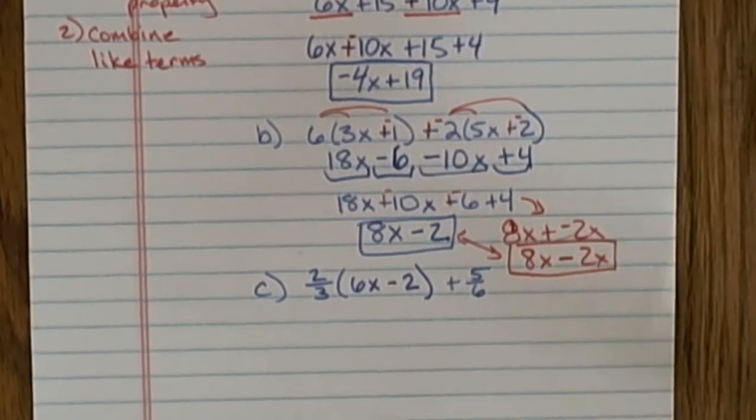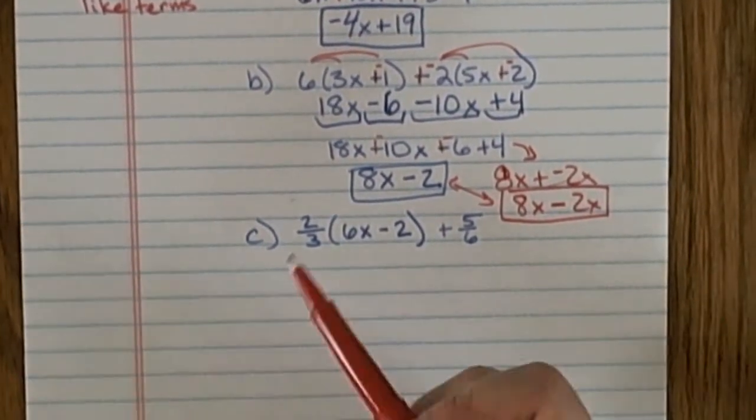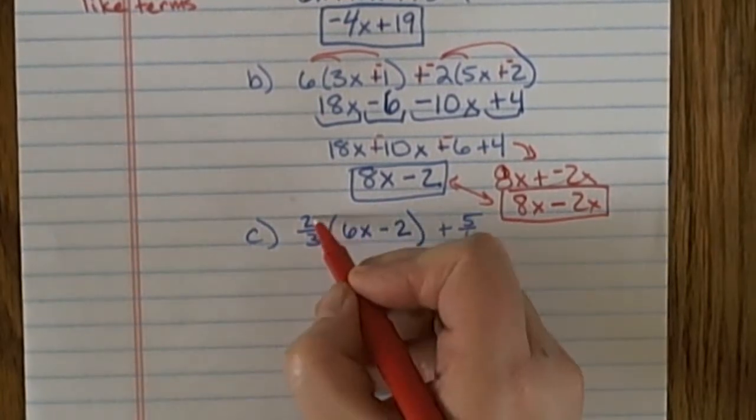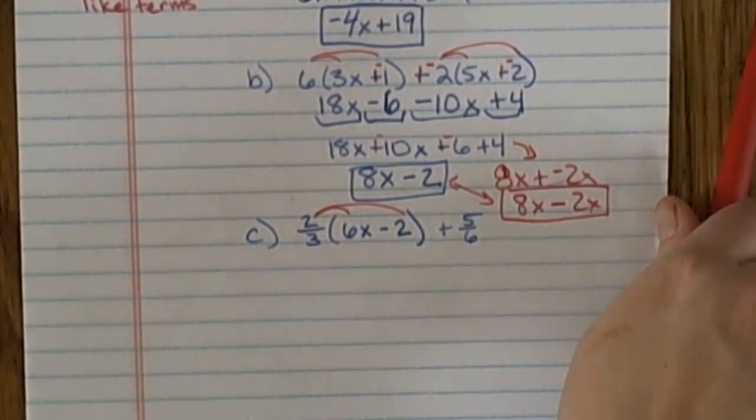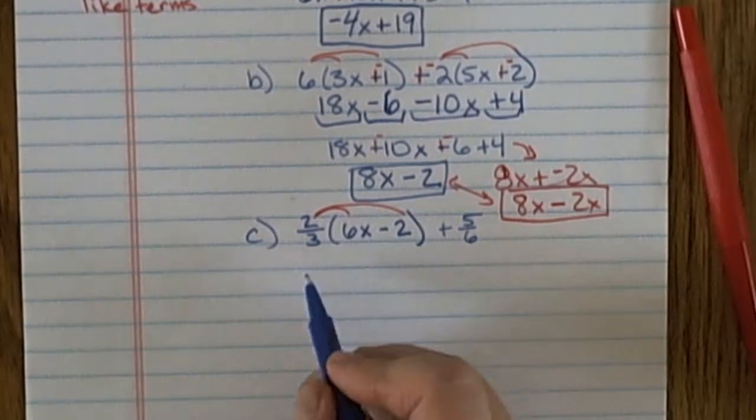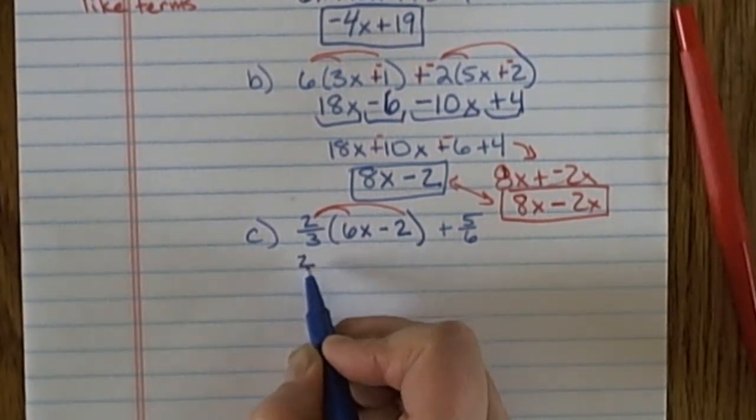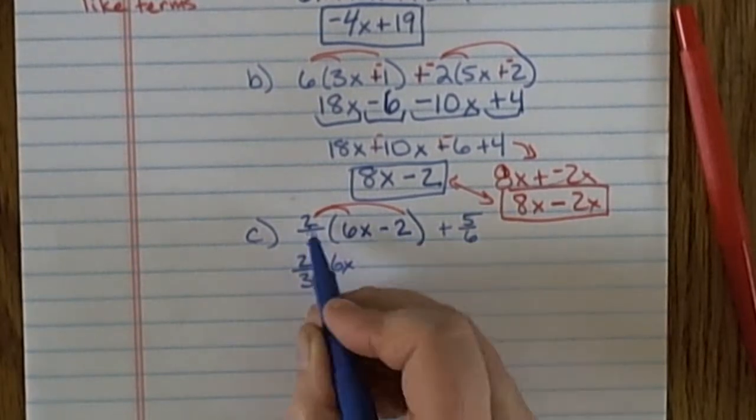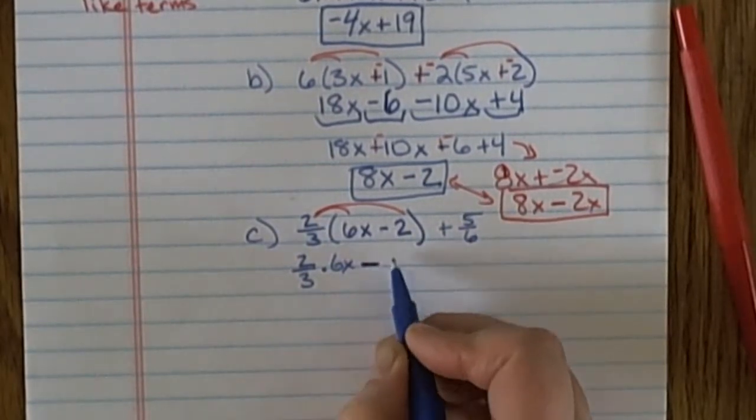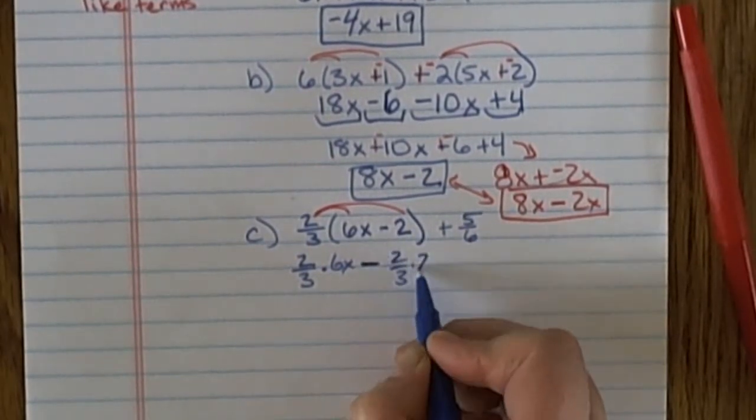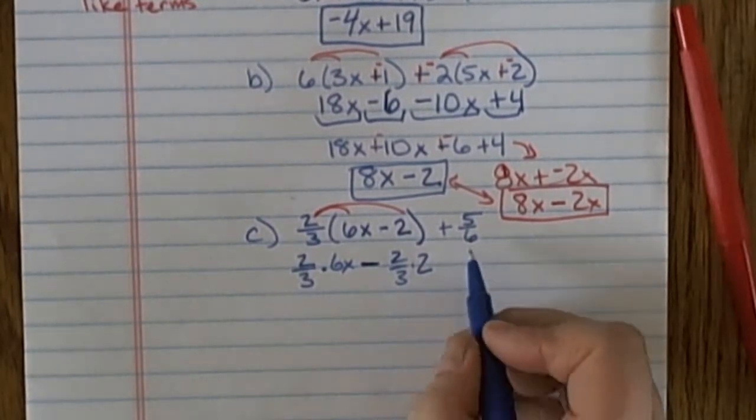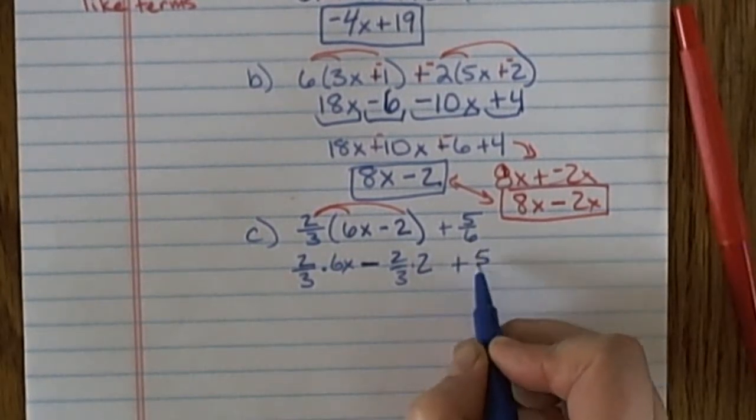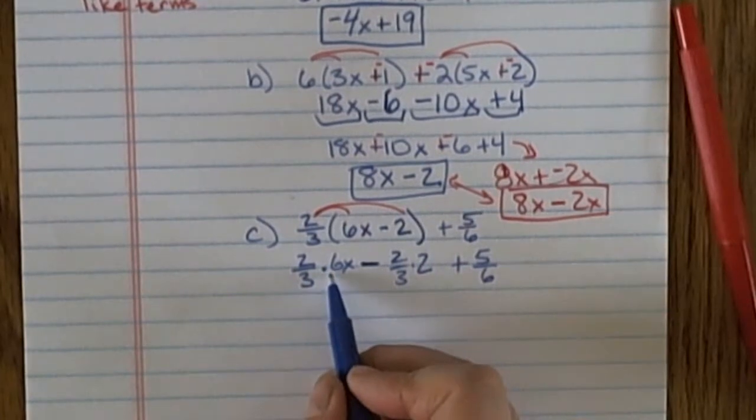On my last example, I'm distributing 2/3. So I'm distributing a fraction. In order to actually work that out, I might rewrite this middle step: 2/3 times 6x. I have a negative times a positive, so I can just say minus 2/3 times 2. Then I still have plus 5/6.